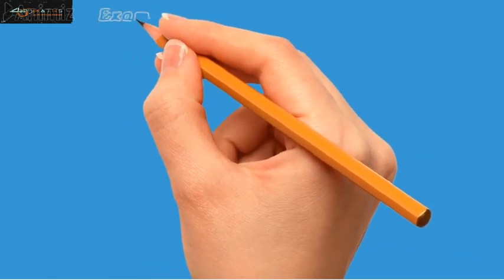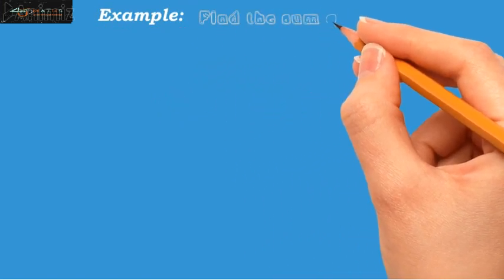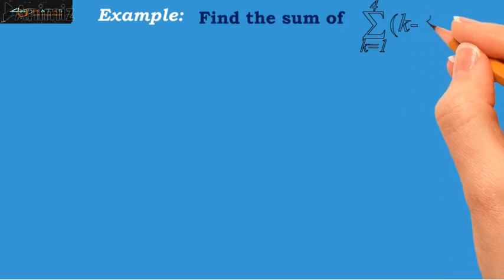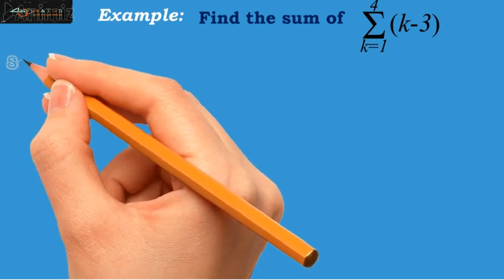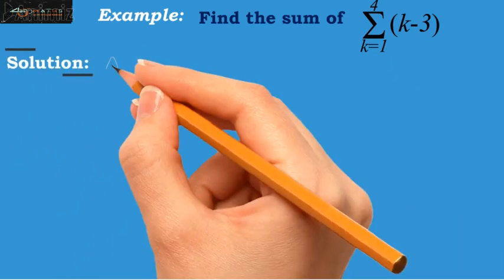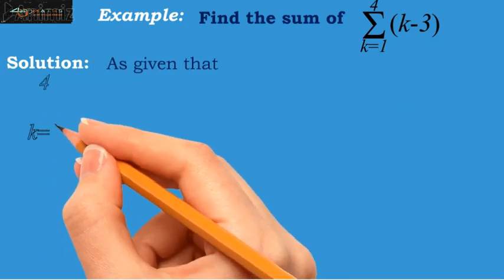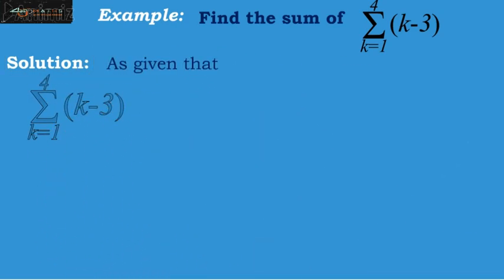Let us take an example. In this example, we are asked find the sum of summation k equals 1 up to 4, while the formula given is k minus 3.